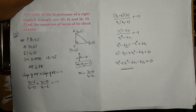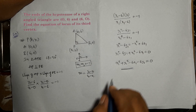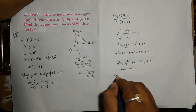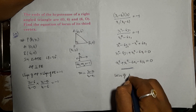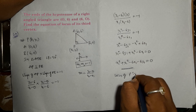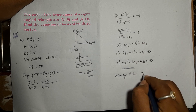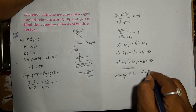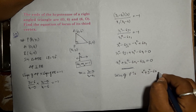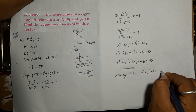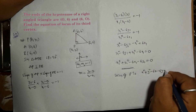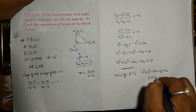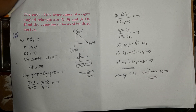This is the locus of point P. Therefore, the locus of P is: x² + y² - 6x - 6y = 0. This is also one of the important problems.